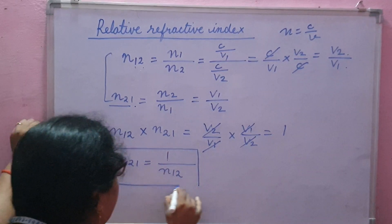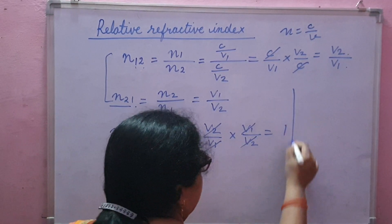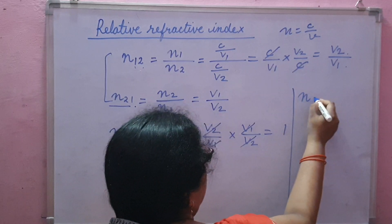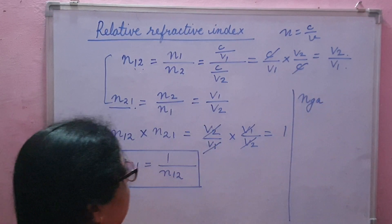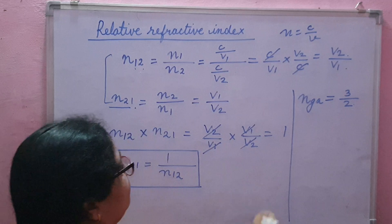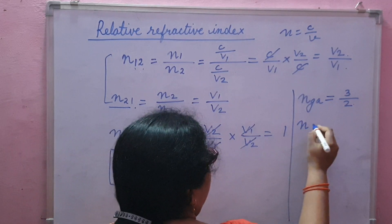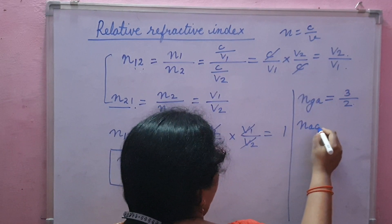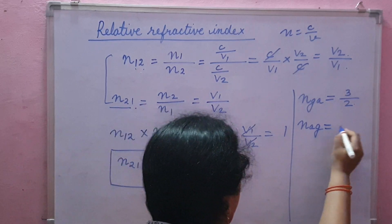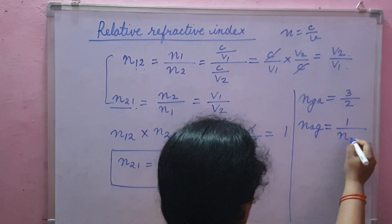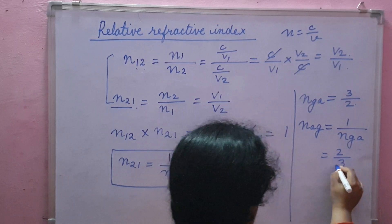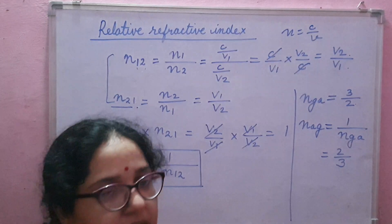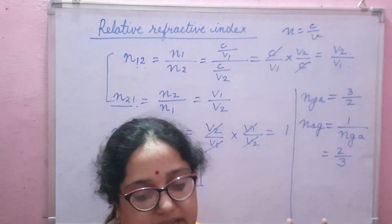For example, if the refractive index of glass with respect to air is given as 3 by 2, and we have to find the refractive index of air with respect to glass, it will be equal to 1 upon N_GA, so its value will be 2 by 3. This is all about relative refractive index.